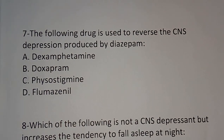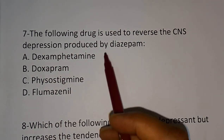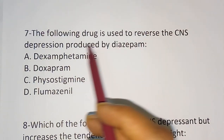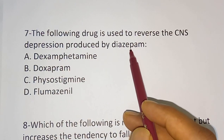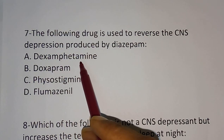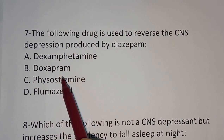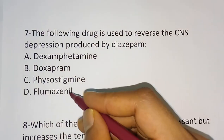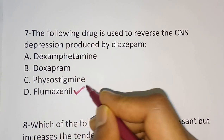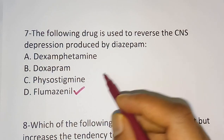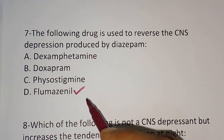Question number 7: the following drug is used to reverse the CNS depression produced by diazepam. Options are: A) dexamphetamine, B) doxapram, C) physostigmine, D) flumazenil. The correct answer is flumazenil. We studied that flumazenil is the benzodiazepine antagonist.